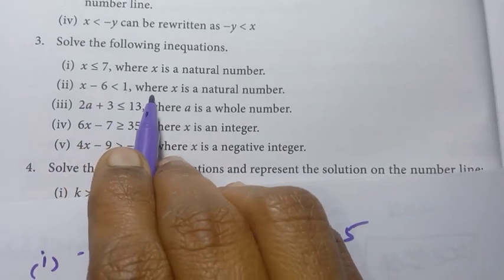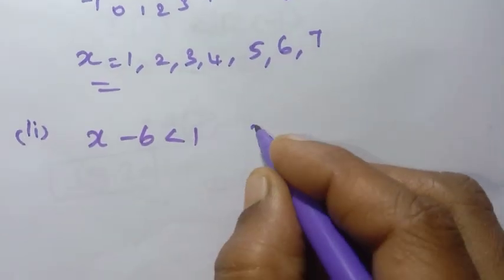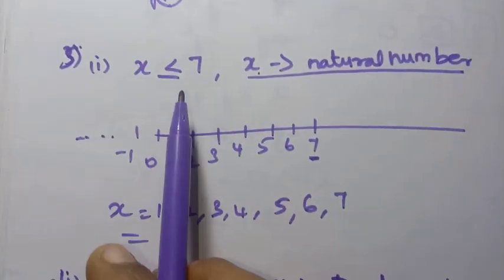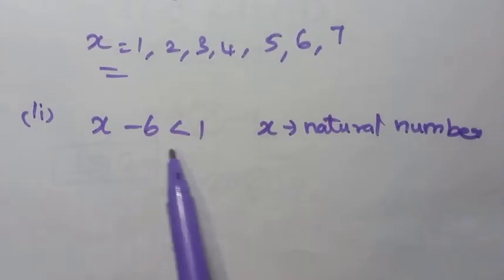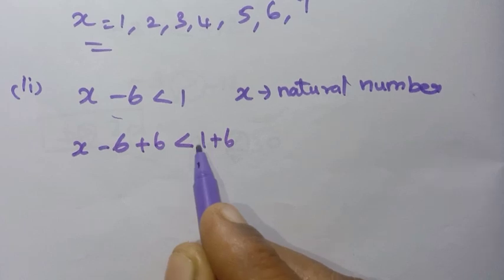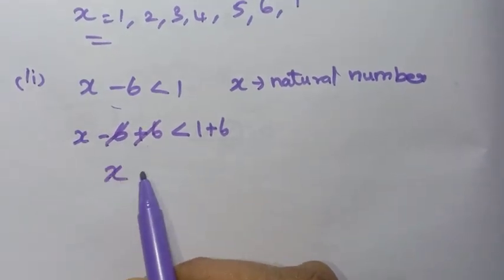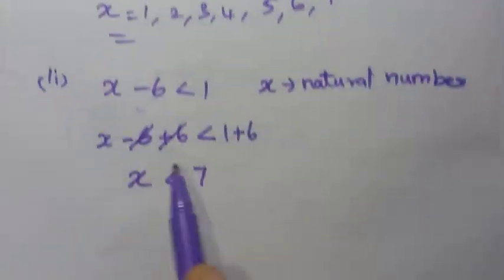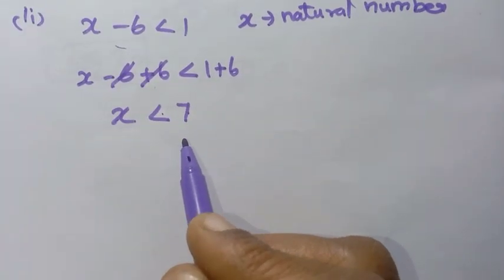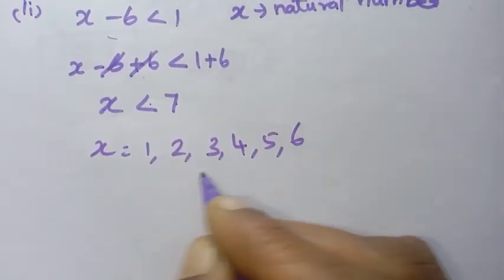Second question: x minus 6 less than 1, where x is a natural number. To solve, add 6 to both sides: plus 6 on left cancels minus 6, giving x less than 1 plus 6, which is x less than 7. Since x is a natural number and only less than 7, the solutions are 1, 2, 3, 4, 5, 6.